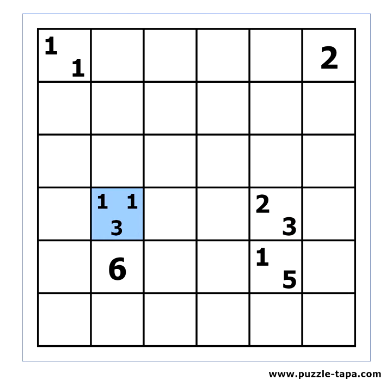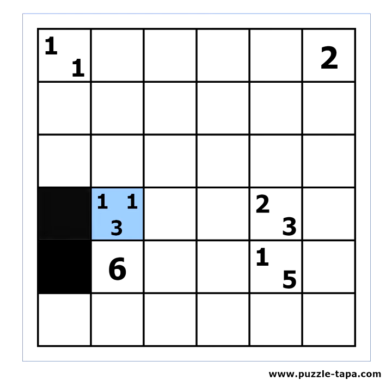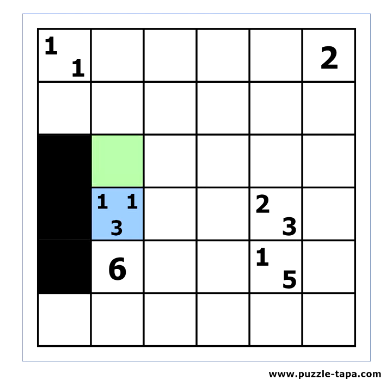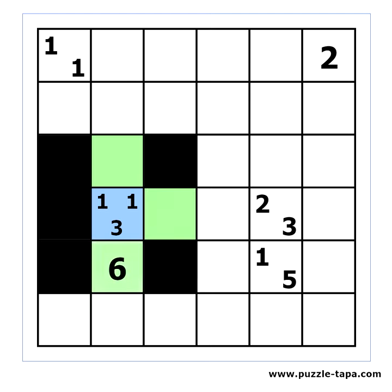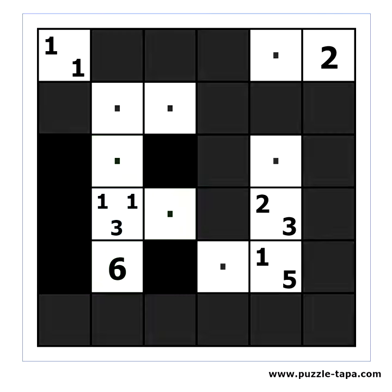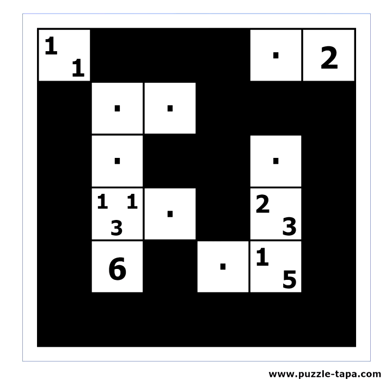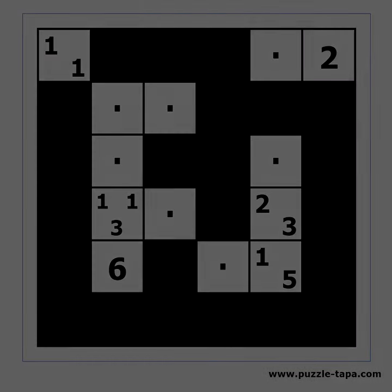A clue with three numbers in it requires three black blocks, and so on. A cell with a clue in it is always white. These are the rules of Tapa. In the next video I will show you how to solve a Tapa puzzle.